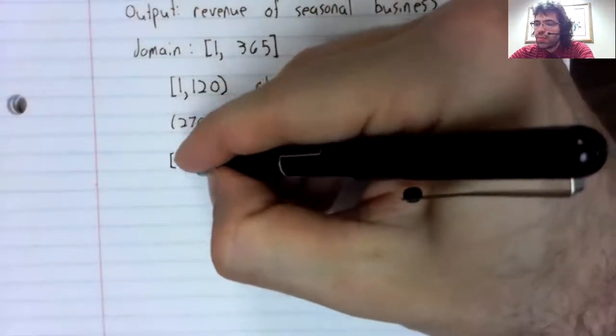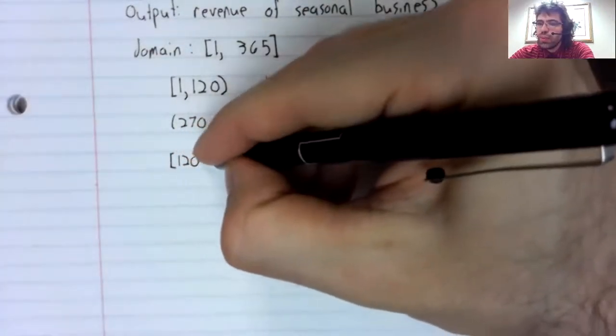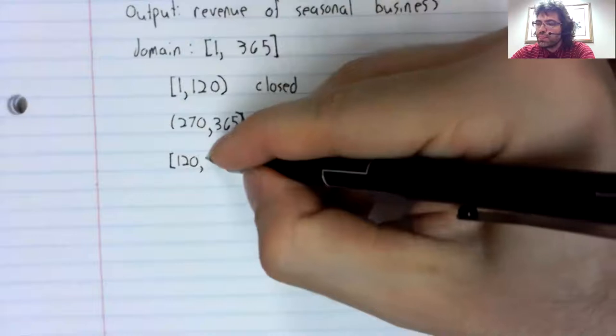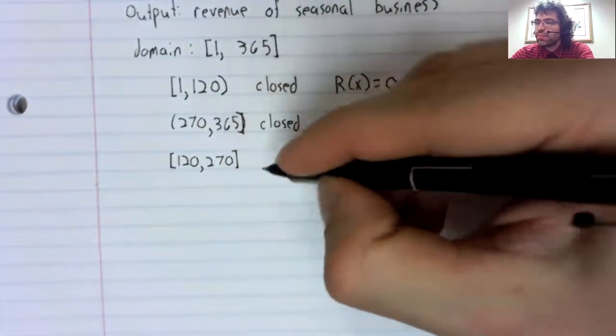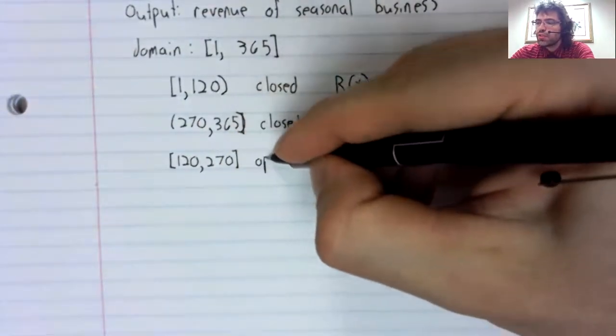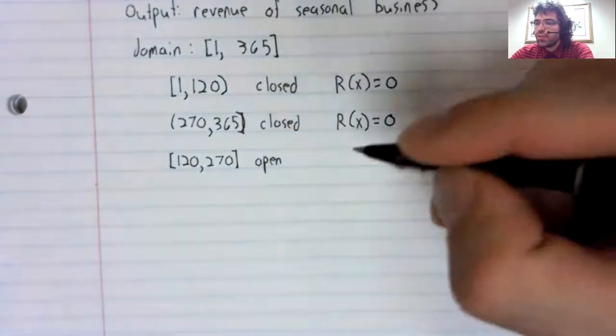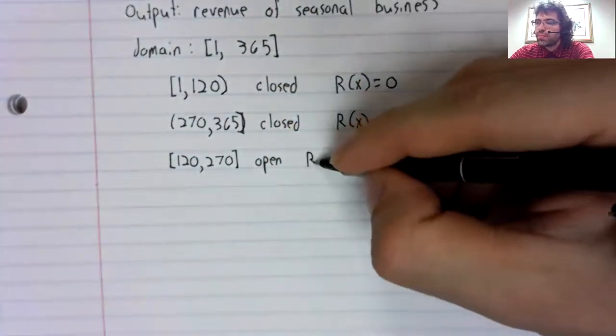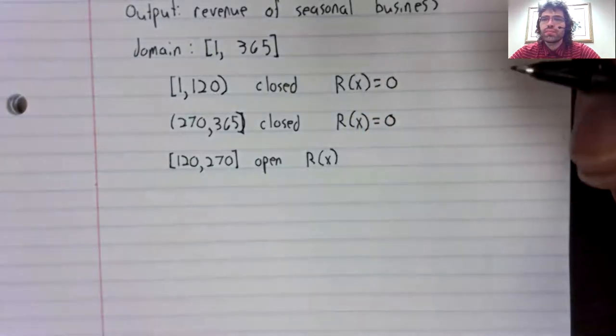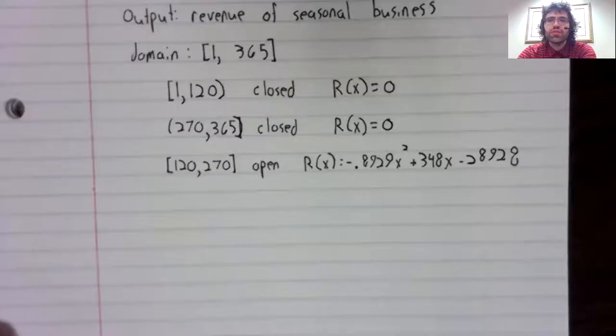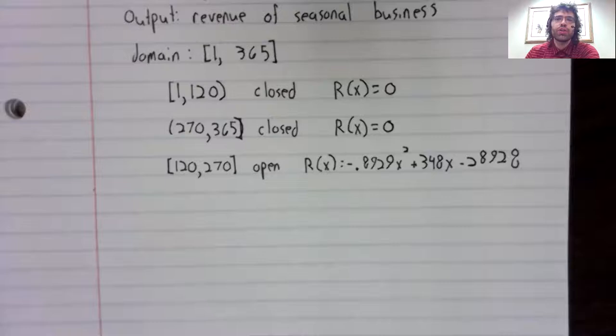But from day 120 to 270, it's open, and the revenue function is this quadratic polynomial.